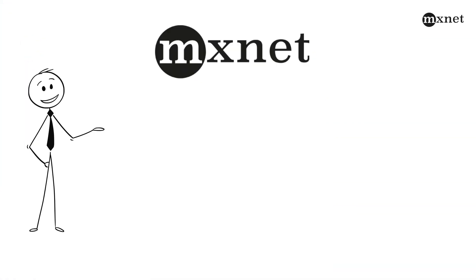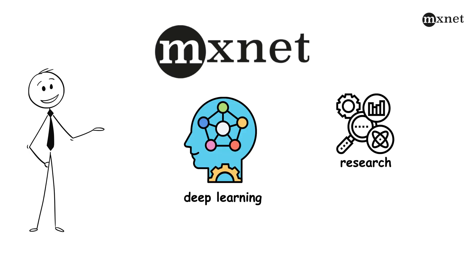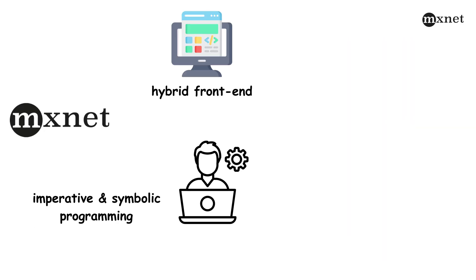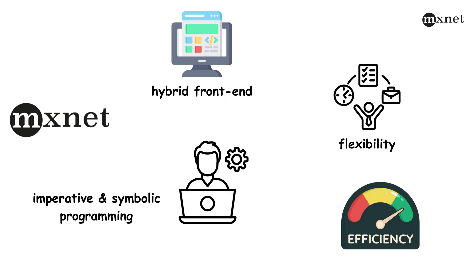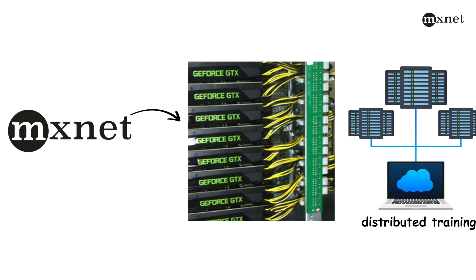MXNet is a flexible and efficient deep learning framework designed for both research prototyping and production. Backed by Amazon, it offers a hybrid front-end that lets developers mix imperative and symbolic programming to maximize both flexibility and efficiency. MXNet scales almost linearly across multiple GPUs and machines, making it excellent for distributed training.